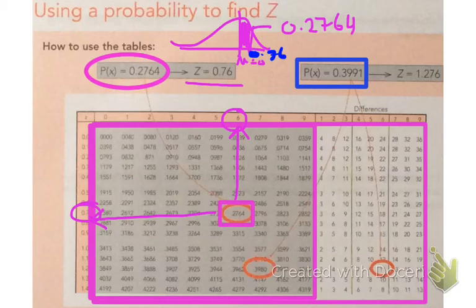And so I'm going to look through all my probability numbers to try and find either that number or the closest number just below it. And when we do that, we find this value here of 0.3980. And we can see the next number after it is 0.3997. So that's too far above, so we can't use that.